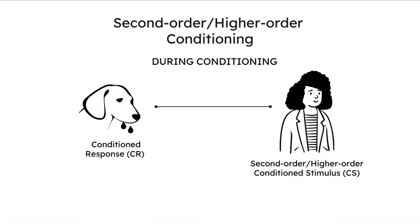In such a situation, the lab assistant has become a second order or higher order conditioned stimulus. This is what second order or higher order conditioning is. Generally, it is difficult to achieve anything above the second order level of conditioning.